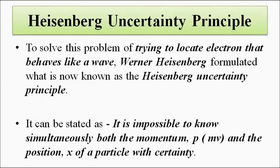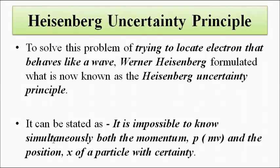In order to solve this problem and answer this question, the Heisenberg uncertainty principle came into play. To locate an electron, taking into account its wave-like properties — the dual nature of the electron, both particle-like and wave-like properties — the principle states that it is impossible to determine simultaneously the momentum of a particle (which is mass multiplied by velocity) and the position of the particle with certainty at the same time.